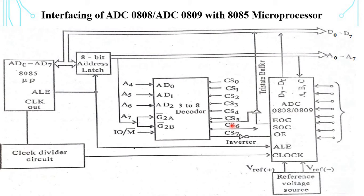CS5 is used to enable the tri-state buffer for interfacing EOC with the data bus. CS7 is inverted and used to enable the output buffer of ADC whenever digital data has to be read from the ADC.